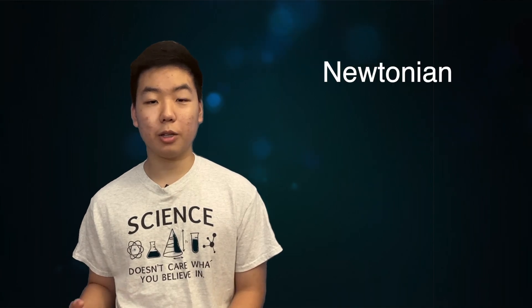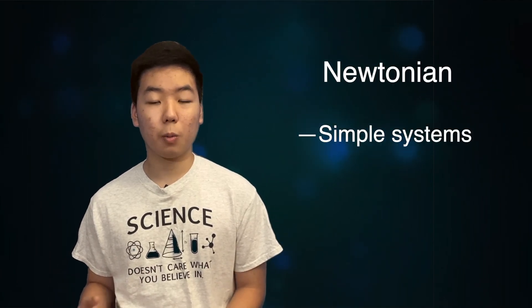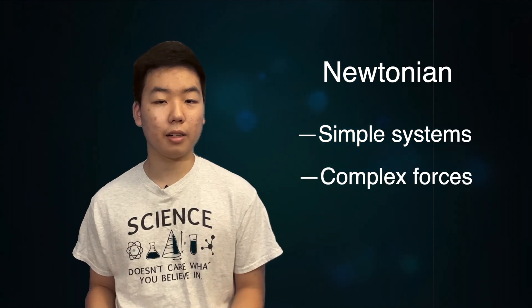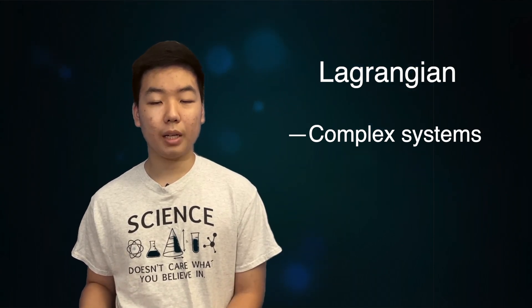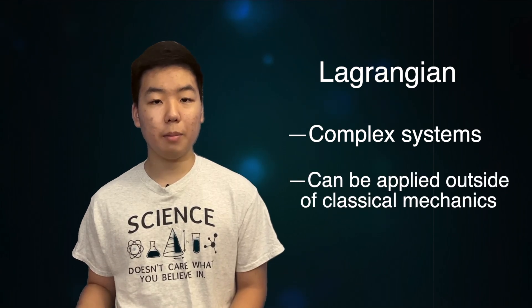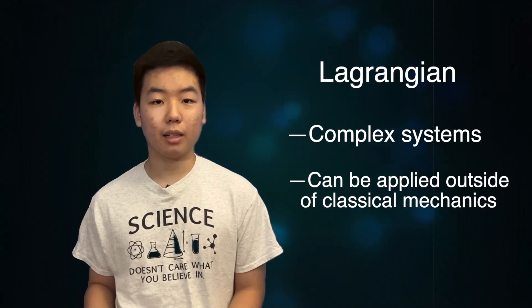So when would you use Newtonian mechanics or Lagrangian mechanics? Newtonian mechanics is usually better for systems that are very simple, or ones that deal with complex forces like friction. Lagrangian mechanics is generally better for more complex systems, where it can be hard to keep track of all the different forces. Because it's also more versatile, it can be applied in different fields outside of classical mechanics, like general relativity and quantum mechanics. So in the end, Lagrangian mechanics is just another way of describing the motion of systems, relying on energy and visualizing the path as a whole.